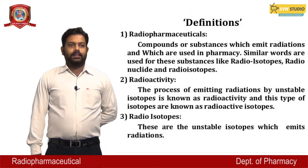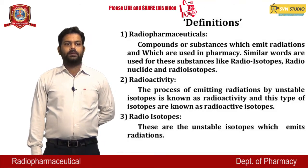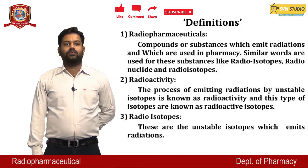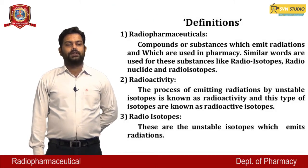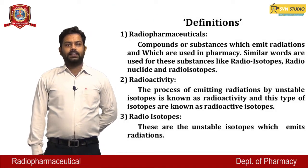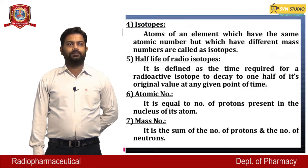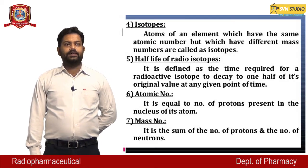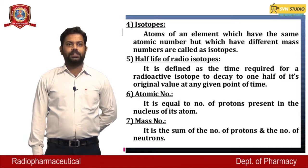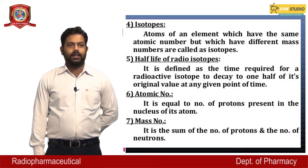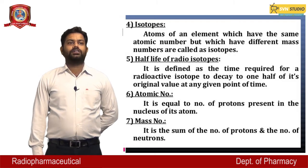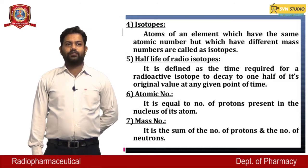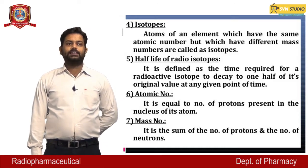Radioactivity is the process of emitting radiation by unstable isotopes, and this type of isotopes are known as radioactive isotopes. Radioisotopes are the unstable isotopes which emit radiation. Isotopes are atoms of an element which have the same atomic number but different mass number.